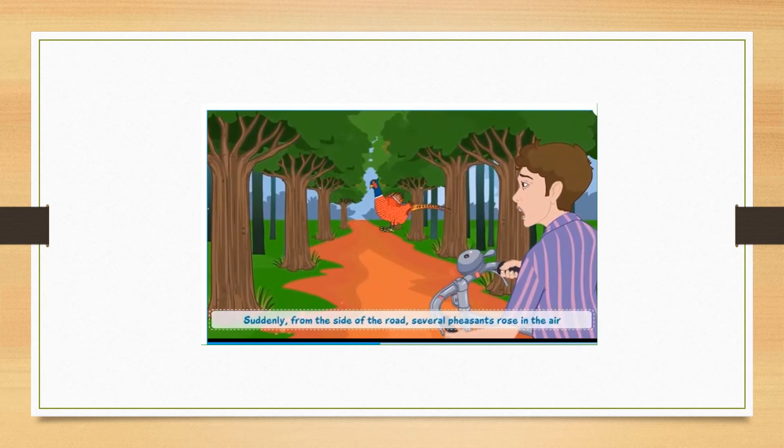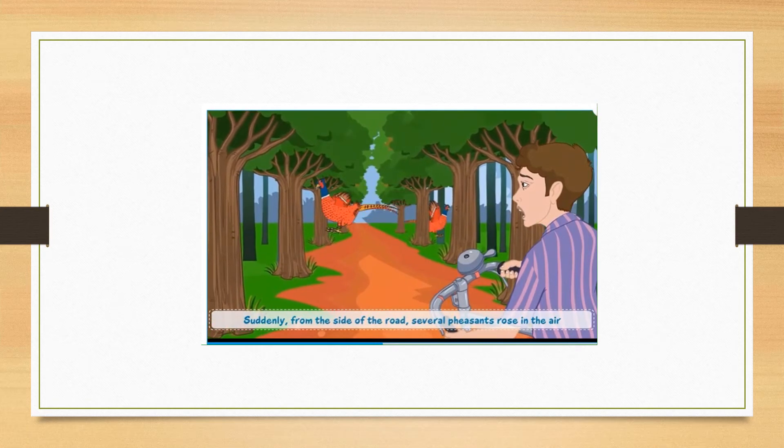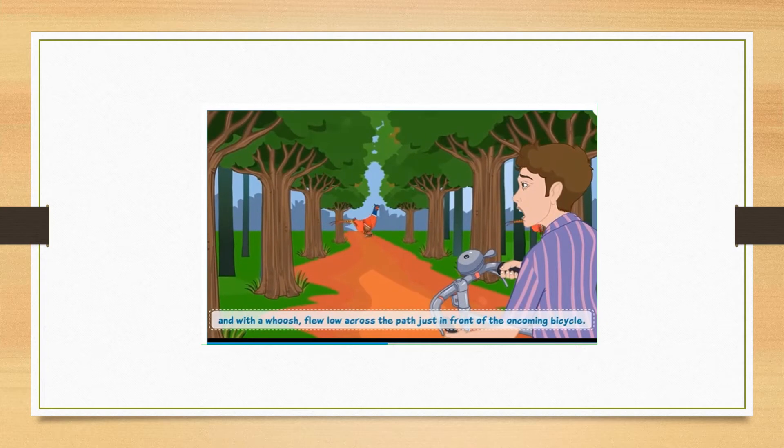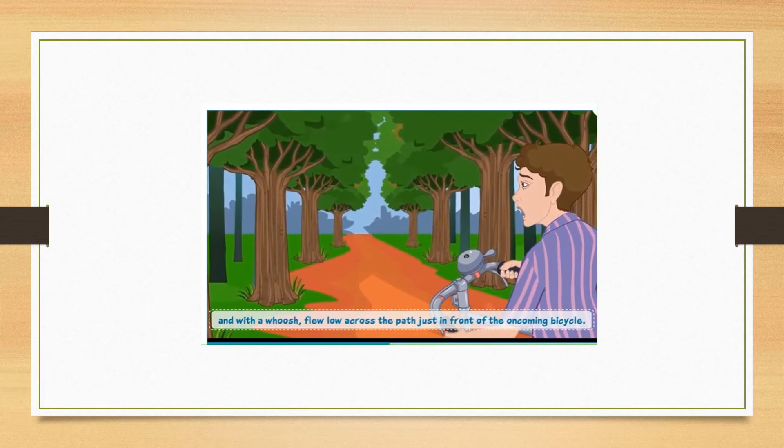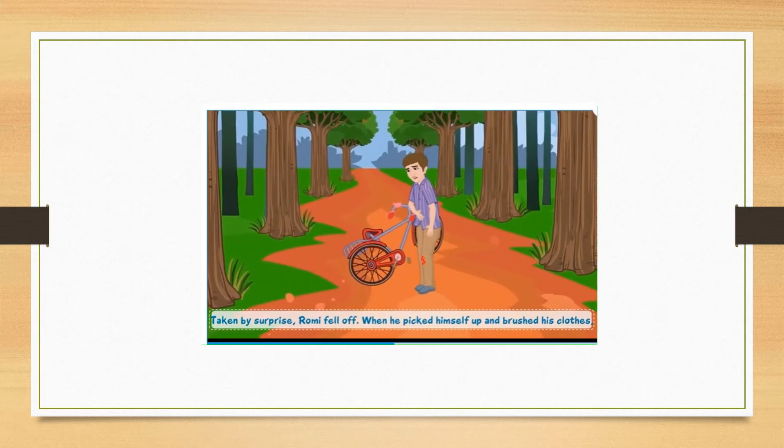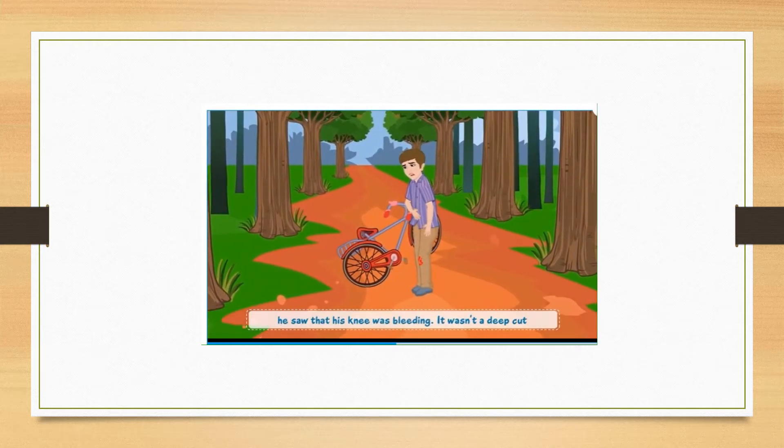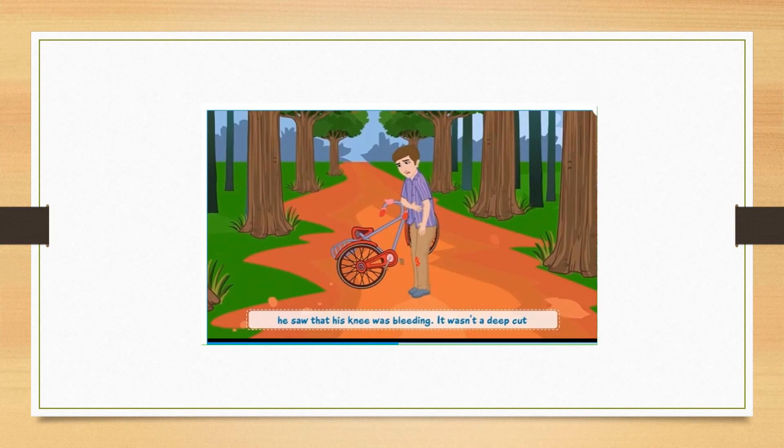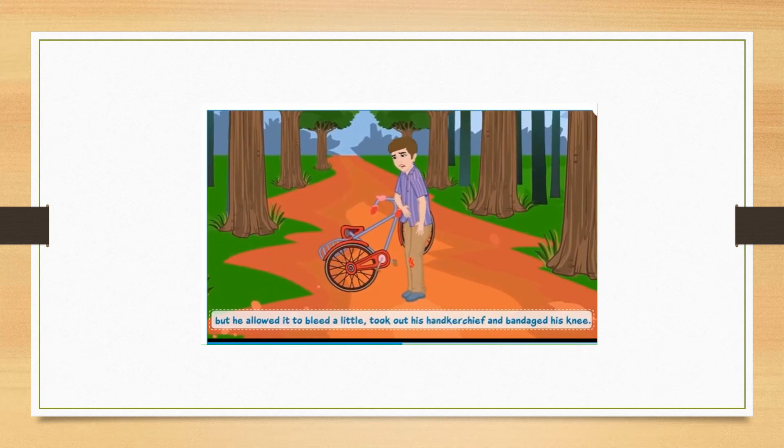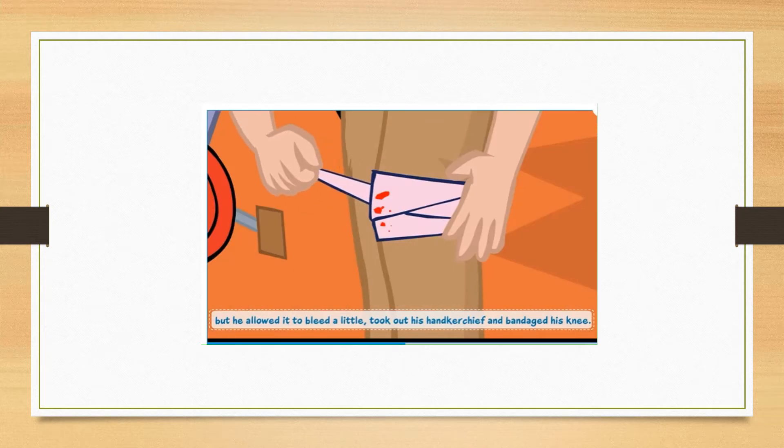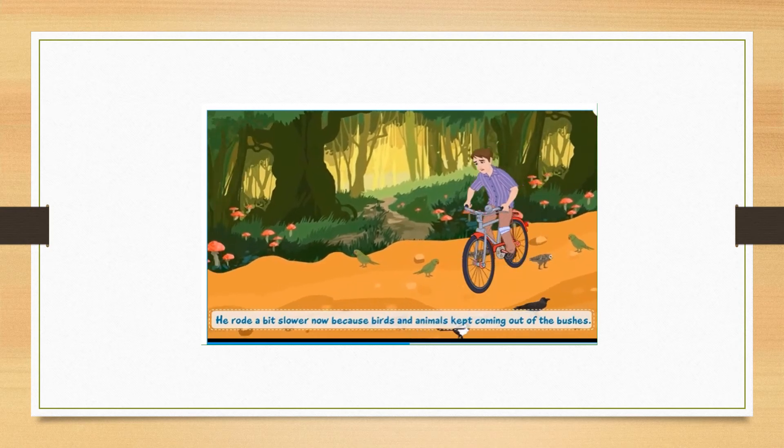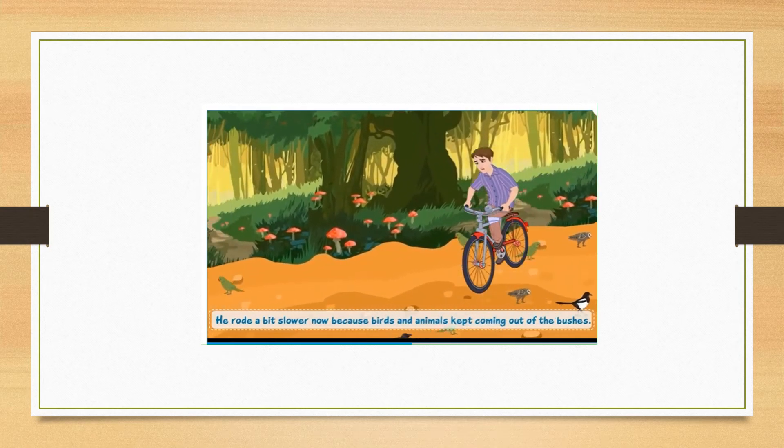Suddenly from the side of the road, several pheasants rose in the air and with a whoosh, flew low across the path just in front of the oncoming bicycle. Taken by surprise, Romy fell off. When he picked himself up and brushed his clothes, he saw that his knee was bleeding. It wasn't a deep cut, but he allowed it to bleed a little, took out his handkerchief and bandaged his knee. He rode a bit slower now because birds and animals kept coming out of the bushes.